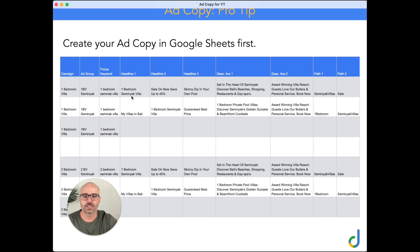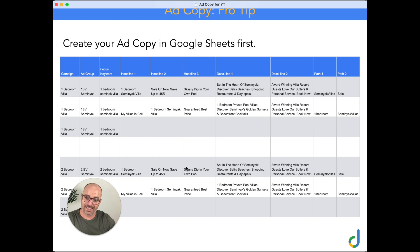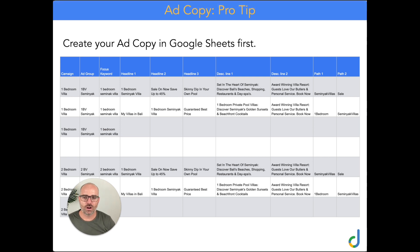For the one-bedroom Villa Seminyak ad group, I put 'One Bedroom Villa Seminyak' in headline two. For the two-bedroom Villa group, I change it to 'Two Bedroom Villa Seminyak.' Then I add the different call to actions — 'Guaranteed Best Price,' 'Skinny Dip In Your Own Pool.' The sheet also lets you cut and copy the ad copy across ad groups — once the template is right, you just change the bedroom count and it's ready to upload into Google Ads.